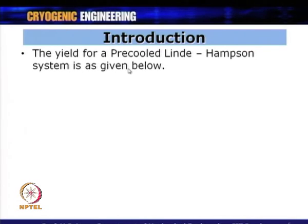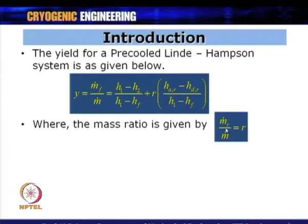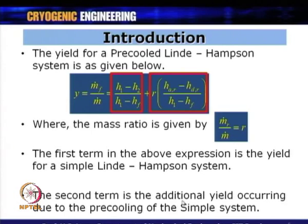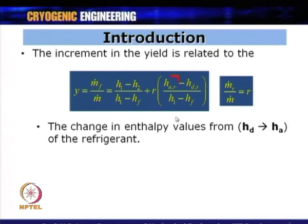The yield for a pre-cooled Linde-Hampson system is: y = M-dot-F / M-dot = (H1 - H2) / (H1 - HF), which is the same as the simple Linde-Hampson cycle, plus an additional yield term due to the pre-cooling cycle, where the mass ratio R = M-dot-R / M-dot. The first term is the yield from the simple Linde-Hampson system and the second term is the additional yield from pre-cooling.